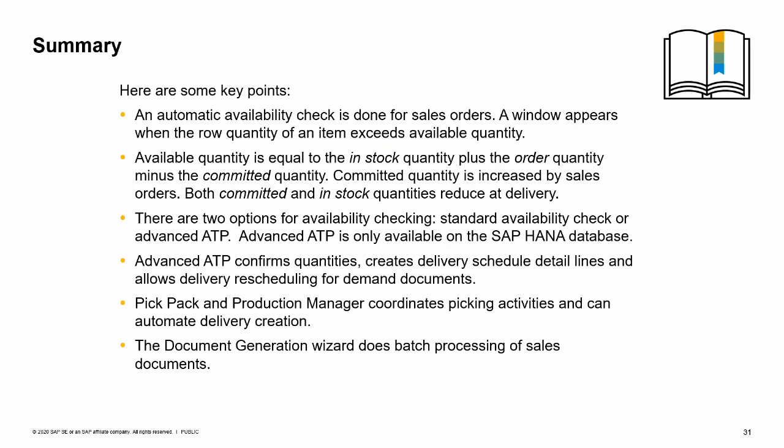Here are some key points. An automatic availability check is done for sales orders as long as you have selected the configuration option. Available quantity is equal to the in-stock quantity plus the order quantity minus the committed quantity. An availability check window appears when the sales order row quantity of an item exceeds available quantity minus the minimum inventory level on the delivery date. You also have the ability to do a manual availability check as needed. Two options exist for availability checking: the standard availability check or the advanced availability to promise. Advanced ATP is only available when you run SAP Business One on the SAP HANA database. The standard check gives you options to change item quantity.